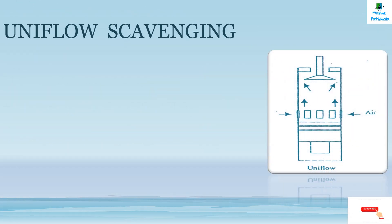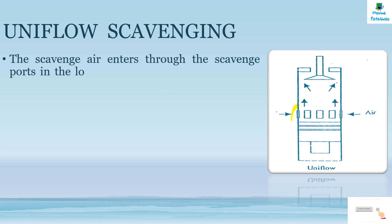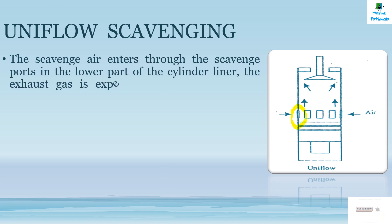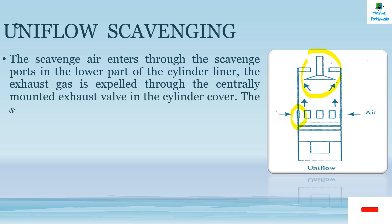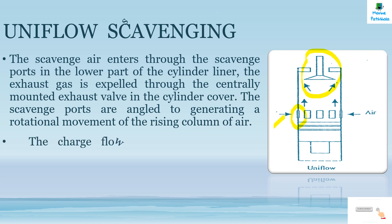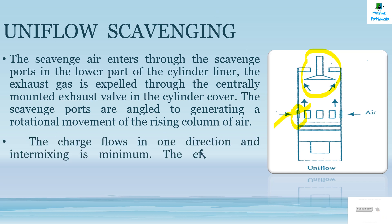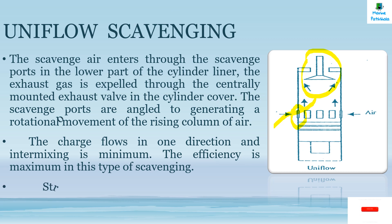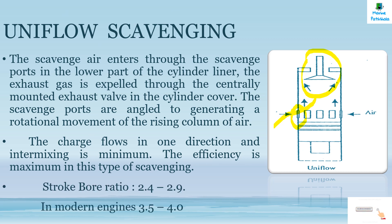Uniflow scavenging: here you can see the scavenged ports in the liner and a centrally mounted exhaust valve at the top of the cylinder cover. The scavenged air enters through the scavenged ports in the liner, and the exhaust gas is expelled through the centrally mounted exhaust valve.